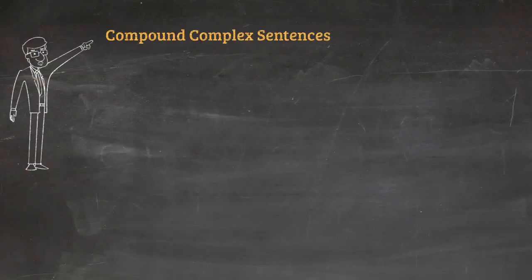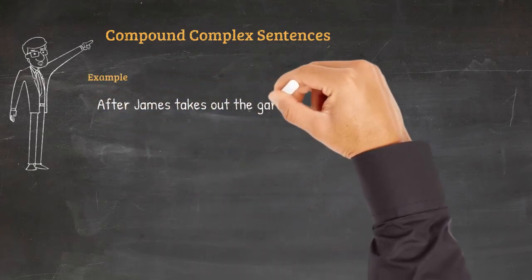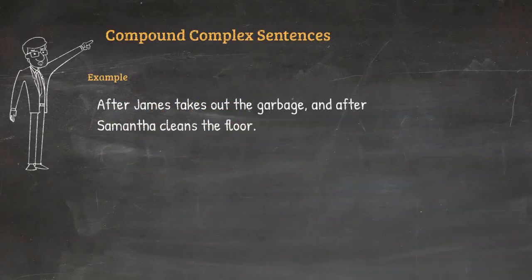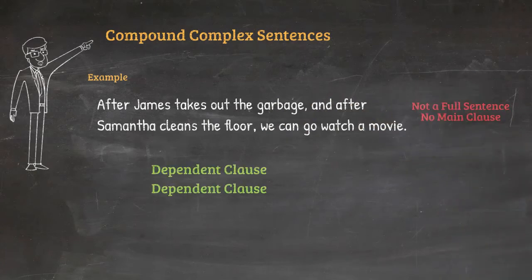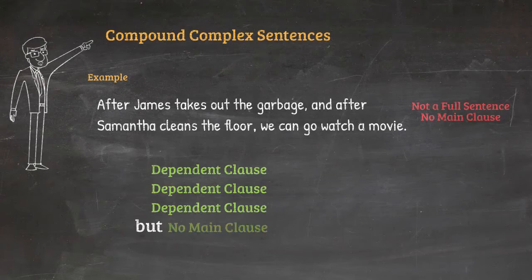We also have to be careful with compound complex sentences, and especially sentences that have two dependent clauses. For example, 'after James takes out the garbage and after Samantha cleans the floor' — this is still not a full sentence because there is still no main clause. What will happen after James takes out the garbage and Samantha cleans the floor? We can have many dependent clauses next to each other, but unless there is a main clause to complete the sentence, that sentence will be a fragment. The correct version is: 'After James takes out the garbage and after Samantha cleans the floor, we can go watch a movie.'